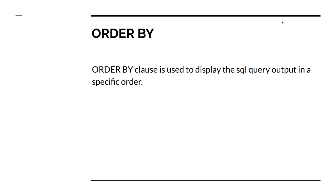In the SELECT statement, the ORDER BY clause is used to display the SQL query output in a specific order. By default it always returns data in ascending sorted order, but you can explicitly mention descending order if needed. You must provide at least one attribute to perform ordering on, and you can also perform ordering on multiple attributes.